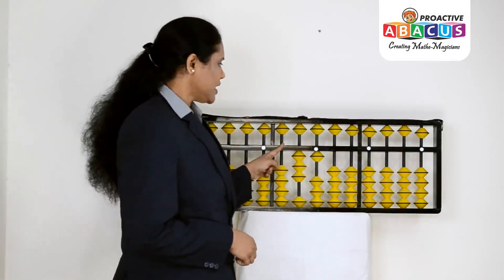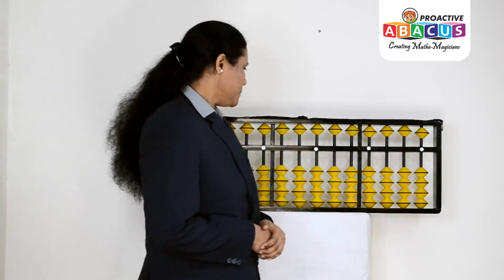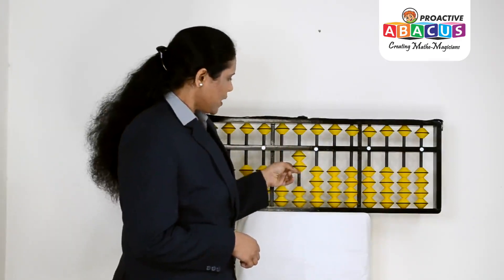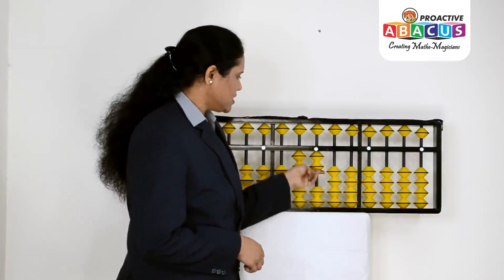The value of tens place is 3, that's 30. Next, we have to show 22. 2 in tens place is 20. Unit place 2 beads touching, that's 22.